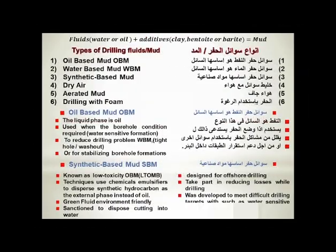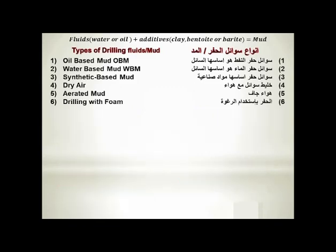We will discuss six different types of drilling fluids and show the advantages, disadvantages, and major differences among them. Drilling fluids — also called mud — are a combination of a liquid phase, which can be water, oil, or synthetic materials, with added chemical compositions such as clay, bentonite, or barite in order to achieve the required properties to drill efficiently. The six types are: oil-based mud, water-based mud, synthetic-based mud, dry air, aerated mud, and drilling with foam.